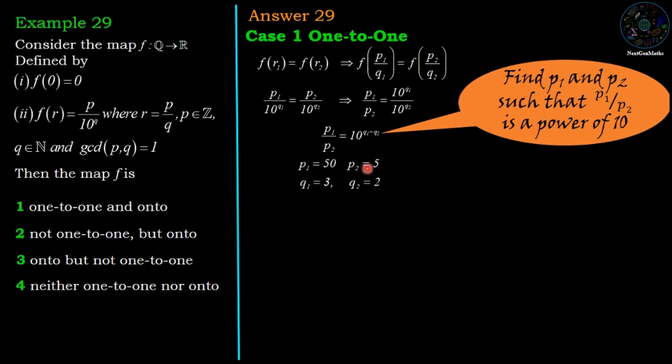P1 = 50 and p2 = 5, so p1/p2 = 10. The corresponding values of q1 and q2 are 3 and 2, so 10^(3-2) = 10.